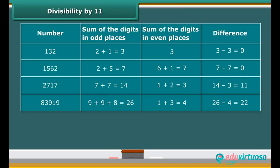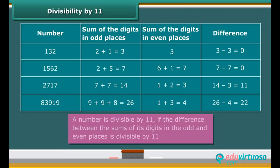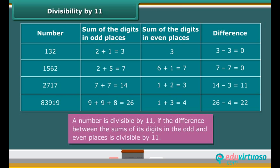This is not by chance — it is a general rule. A number is divisible by eleven if the difference between the sums of its digits in the odd and even places is divisible by eleven.